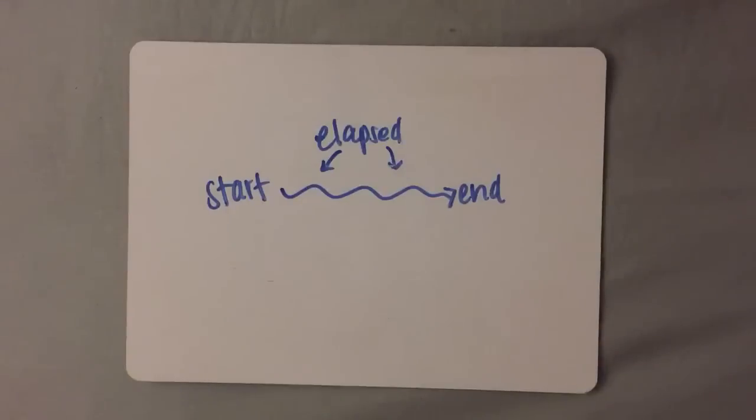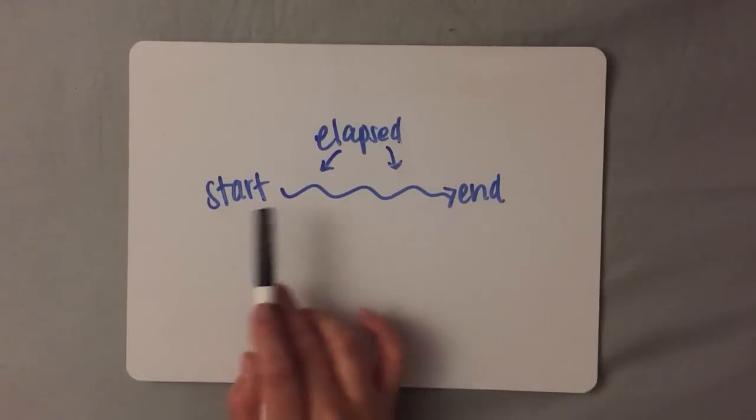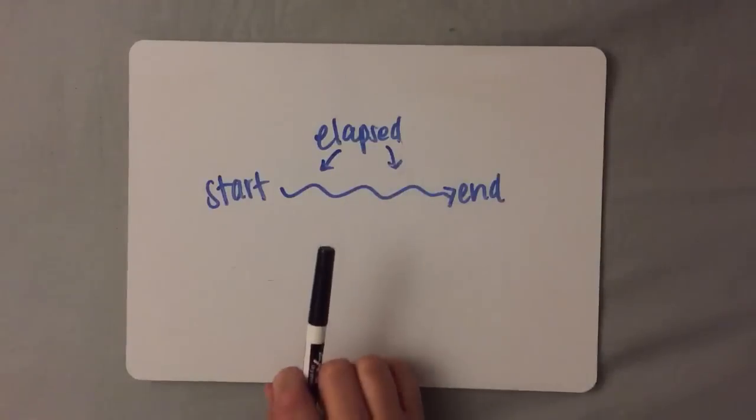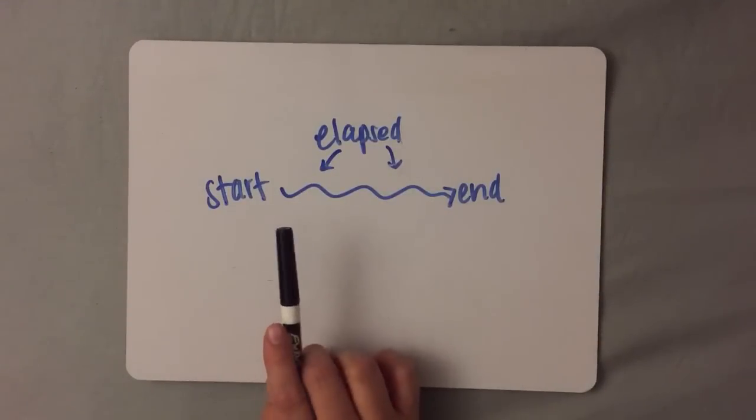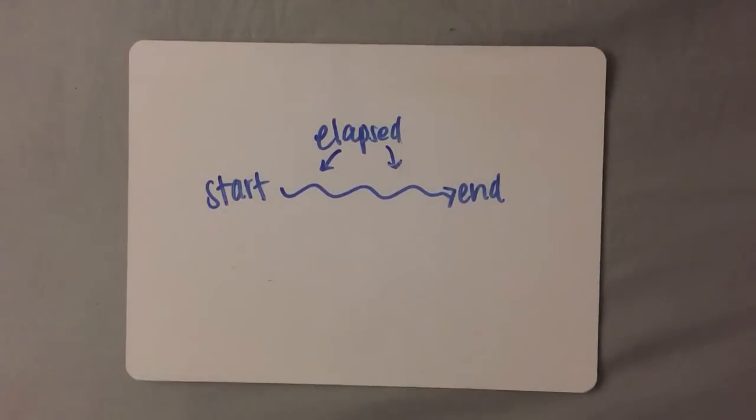As a quick review, you need to know that when you're given a start time and end time, you find elapsed time. And now, you'll be given a start time and elapsed time and need to find the end time.